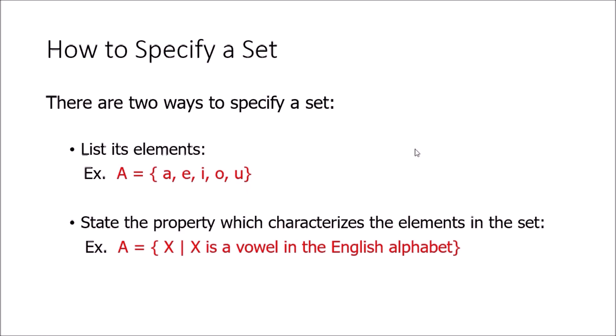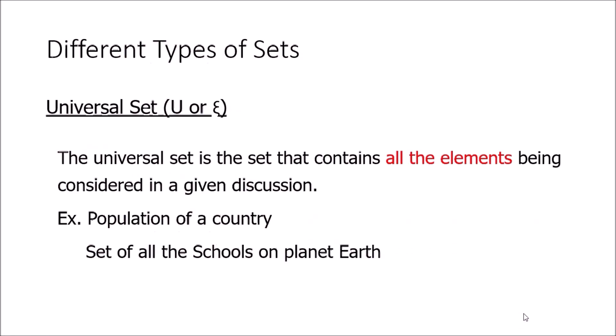The reason we have two methods is that sometimes the number of elements in a set is very large and you cannot list them all. In that situation, you can simply state the defining property as a sentence. Now, the universal set — denoted by capital U or the symbol ε — is the set that contains all elements being considered in a given discussion, for example the population of a country or the set of all schools on planet Earth.